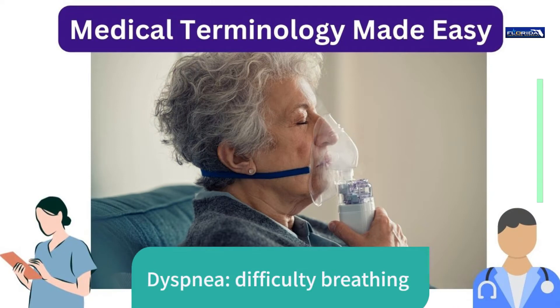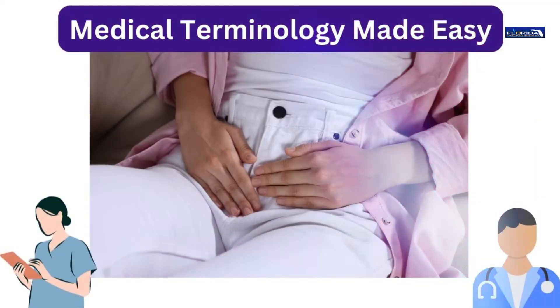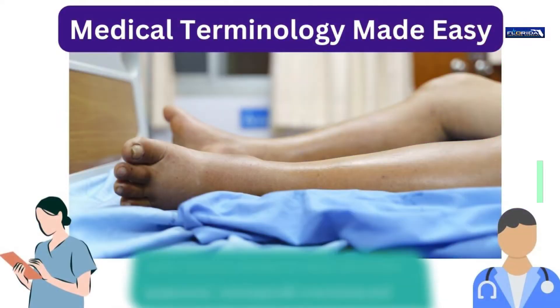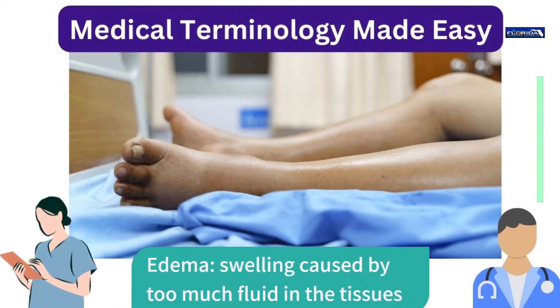Dyspnea: difficulty breathing. Dysuria: difficulty urinating. Edema: swelling caused by too much fluid in the tissues.